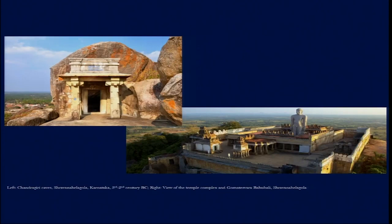Another very important Jain site in southern India is Shravana Velagola, which developed during the 3rd to 2nd century BC. This is also the site where the Maurya emperor Chandragupta Maurya — grandfather of emperor Ashoka — relocated after retiring from his responsibilities as a ruler. He moved to this southern site of Shravana Velagola, which is in present-day southern Karnataka.